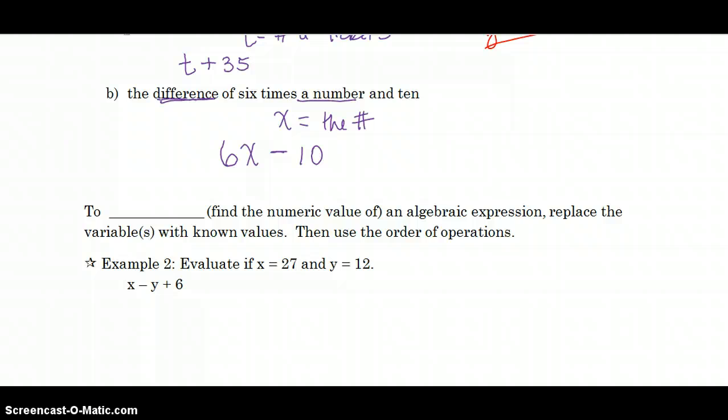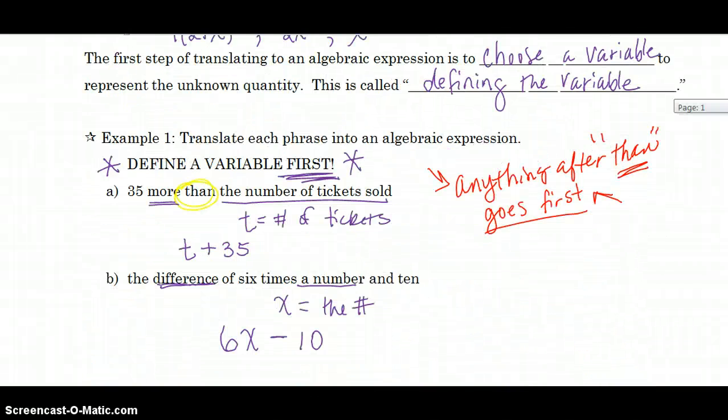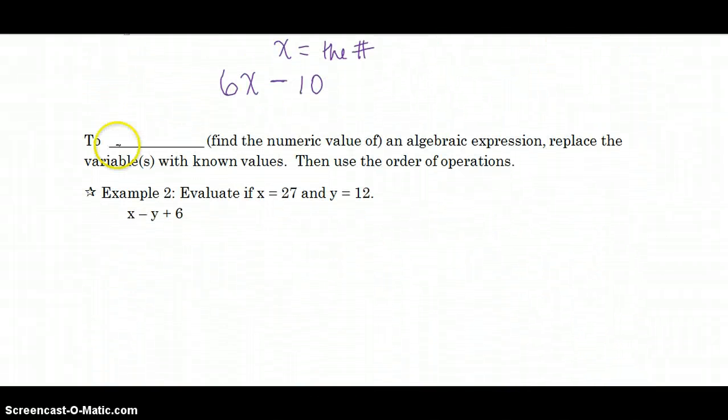That is the first half of our objective. To be able to translate a verbal phrase into an algebraic expression. Now we're going to need to evaluate. What did evaluate mean yesterday? It meant find the value. So we're evaluating the expression containing the variable. So here we go. To evaluate means to find the numeric value of an algebraic expression. Replace the variable with the known values. Then use the order of operations.